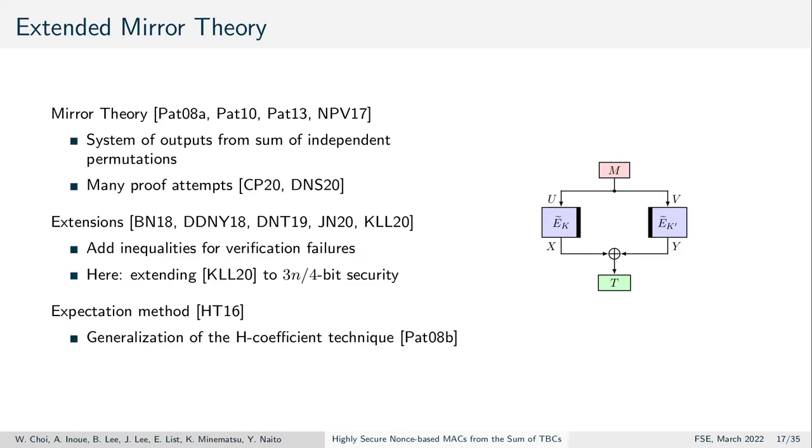The proof of NAT2 builds on Patarin's mirror theory. We build also upon the extensions of mirror theory by Kim et al. whose work had added inequalities to Patarin's theory. This work extends theirs to show a 3n/4 bit security bound instead of 2n/3. Moreover, we employ the expectation method, a generalization of Patarin's H-coefficient technique.